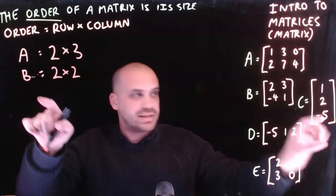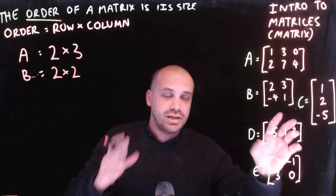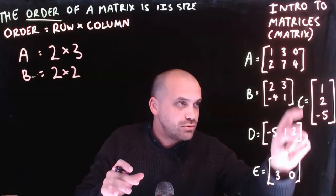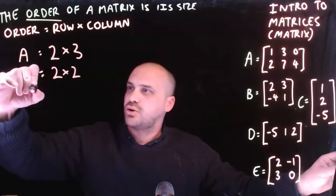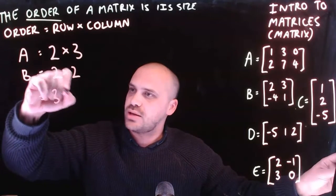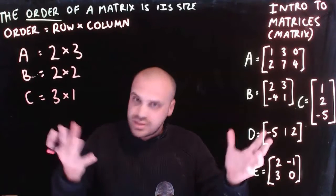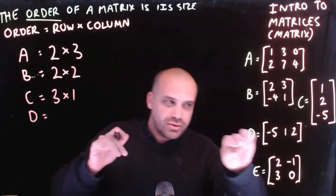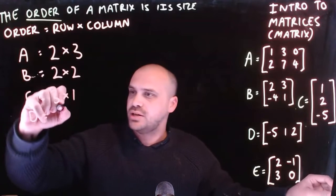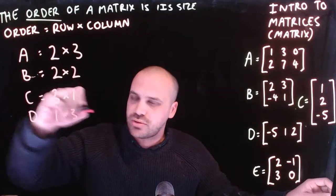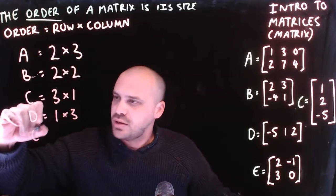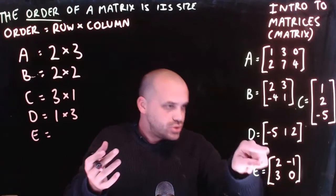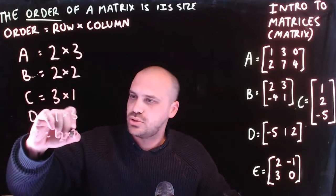Matrix C is interesting. It's what's called a column vector because it has 3 rows but only 1 column, so it is a 3 by 1. D is the opposite of that — D has 1 row and 3 columns. It's called a row vector, so it's a 1 by 3 matrix. And finally, matrix E is another 2 by 2 matrix.